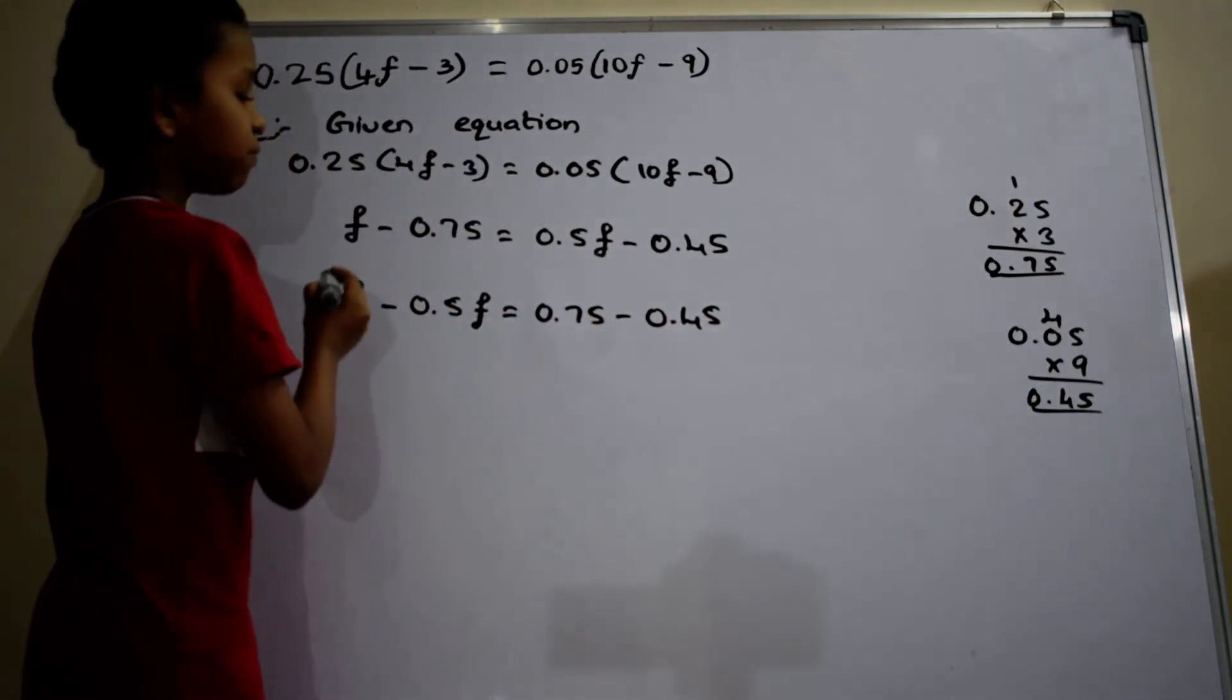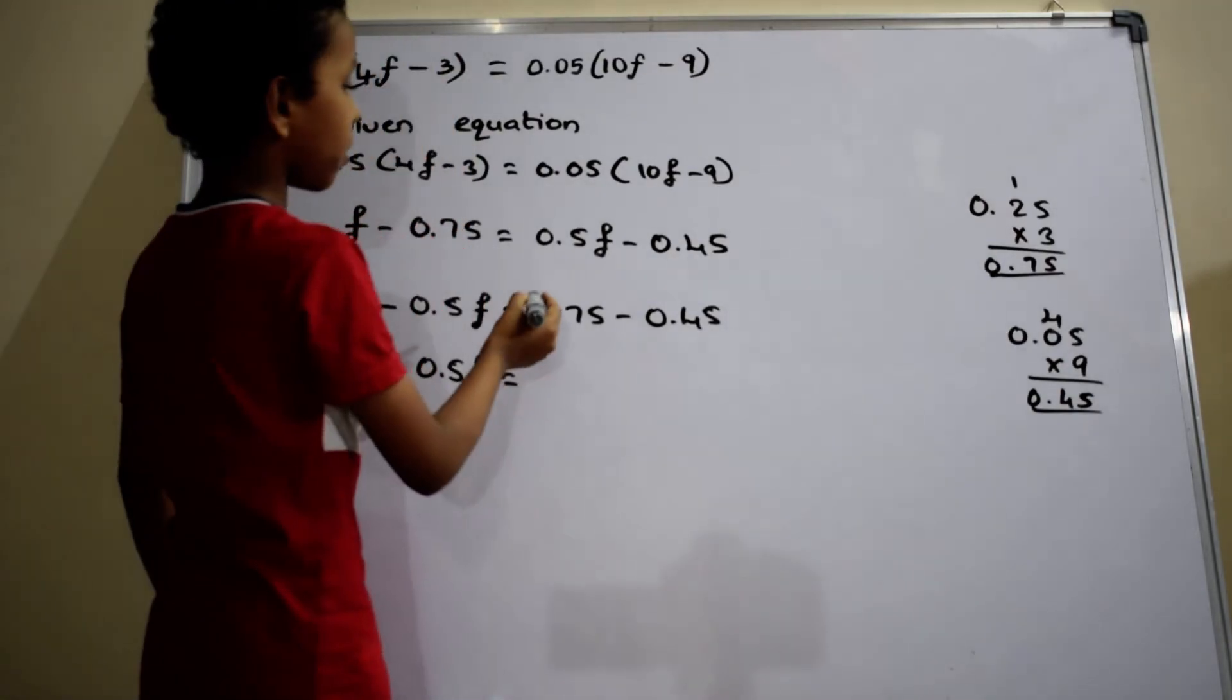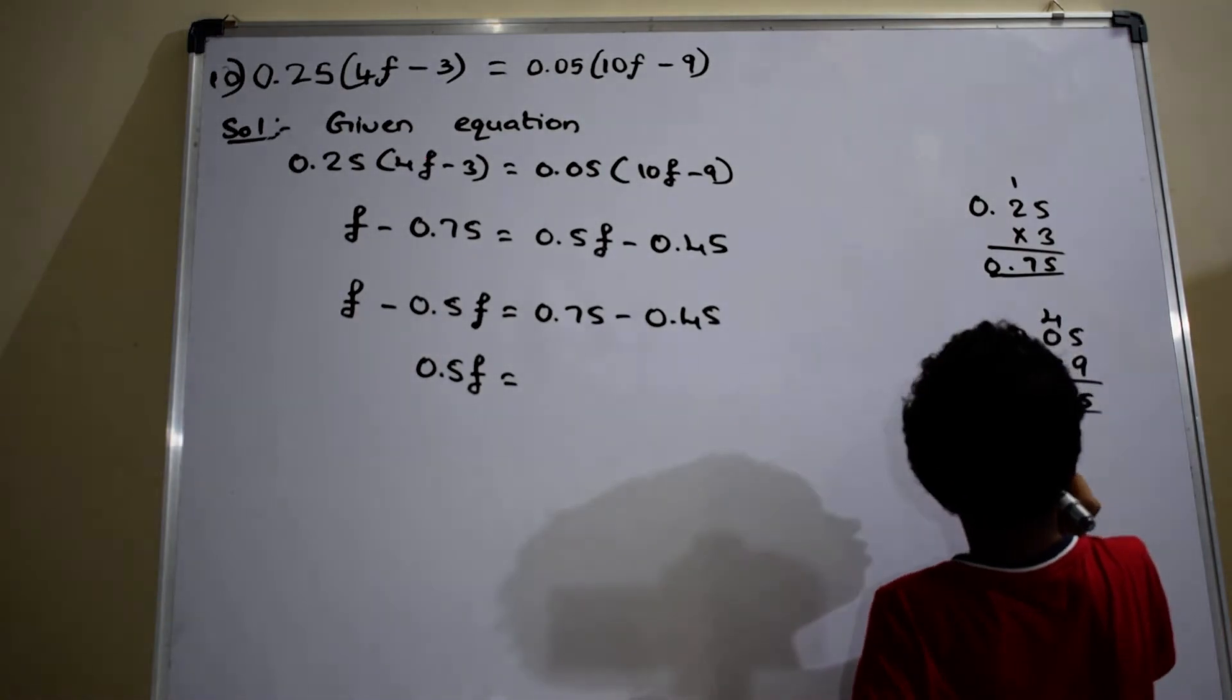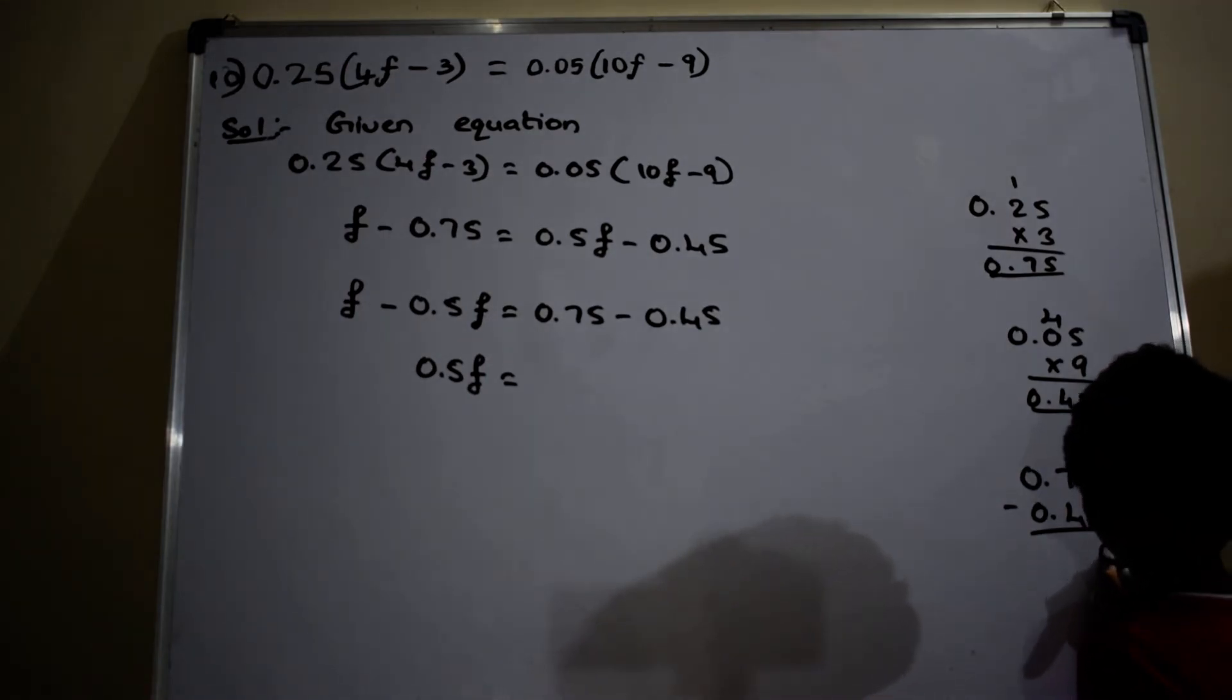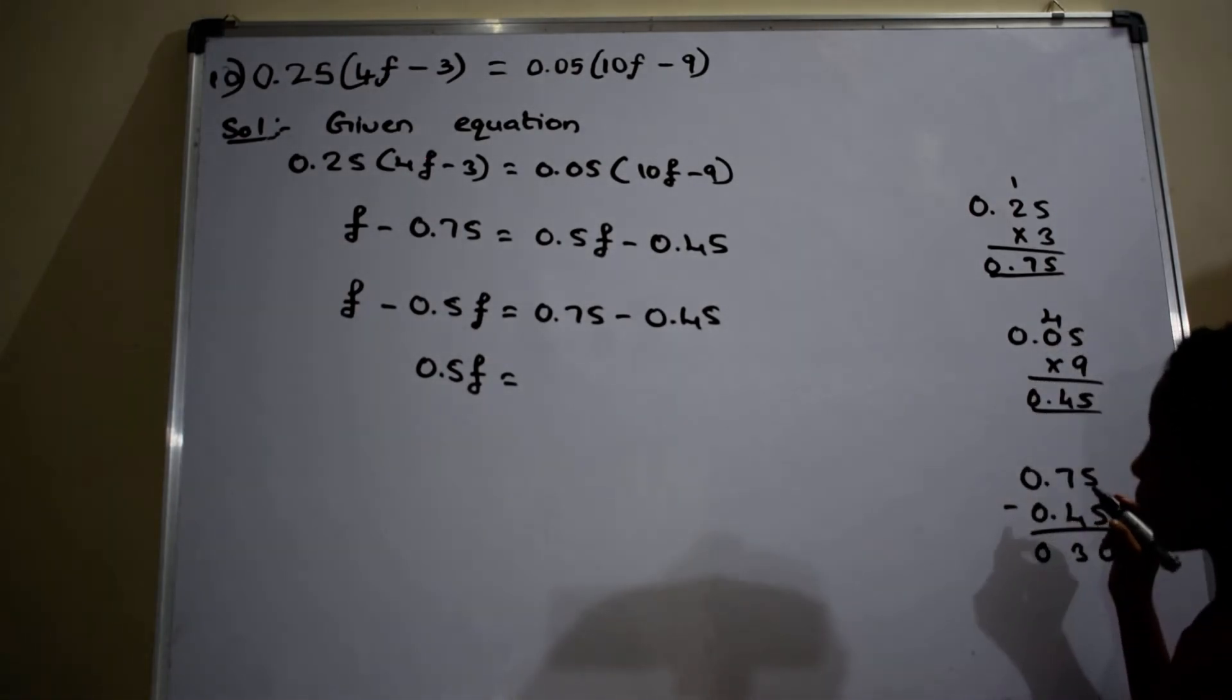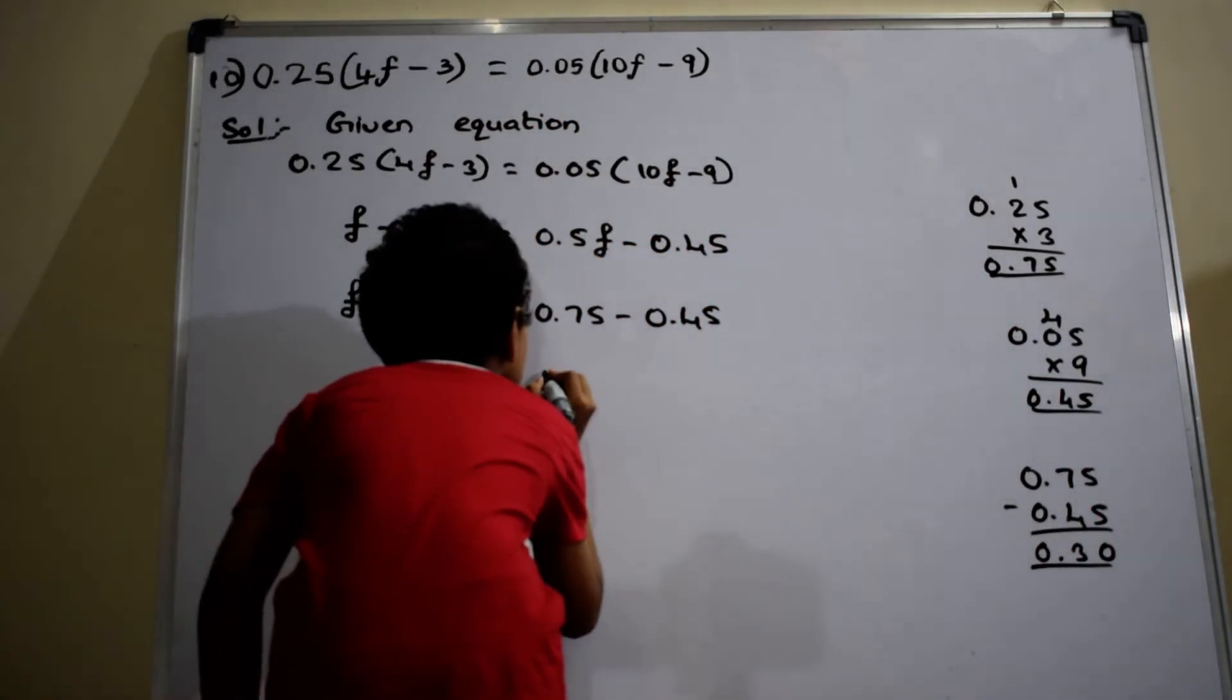0.5f equals 0.75 minus 0.45. After decimal point, there are two digits. So, put here decimal point. Which will equal to 0.5f equals to 0.30.